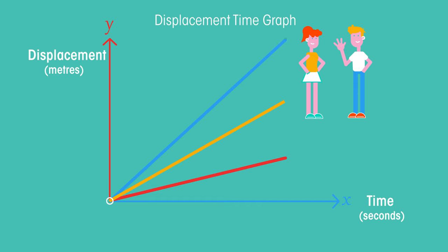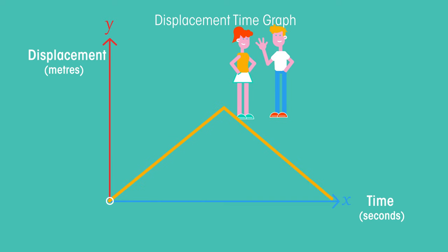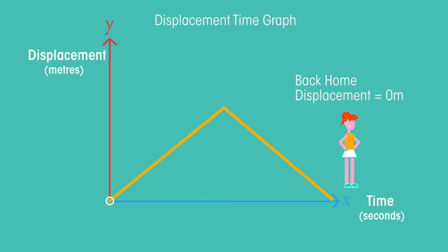She then walks back home at the same speed, but this time she is walking away from Bob, so the line we draw must head in the opposite direction. We draw the line downwards, back towards the horizontal axis. When she gets back to the horizontal axis, this means she is back home. She has no displacement anymore.